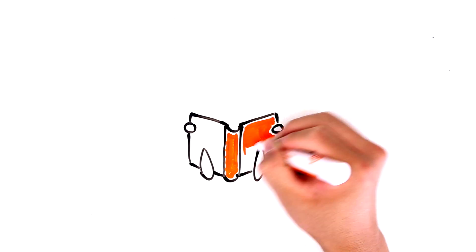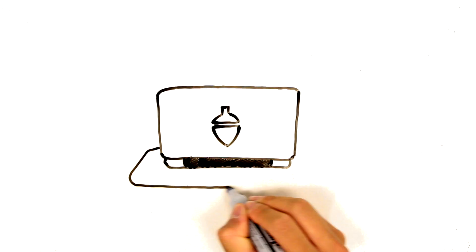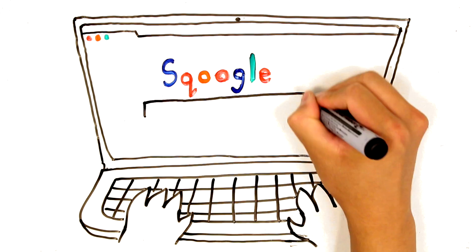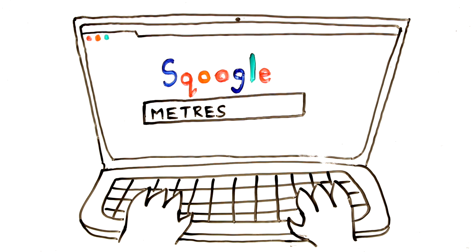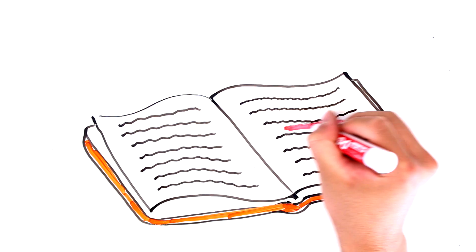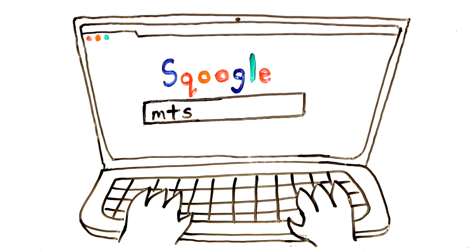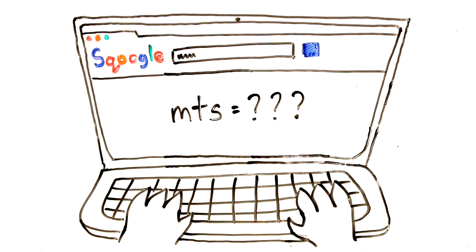Later that night, Grammar Squirrel consults her science textbook to find the appropriate unit of measurement, before using her favorite search engine to confirm what she discovered. She then researches the other abbreviations that her friends used by referring to her textbook and Squoogle once more, before explaining why these abbreviations would have caused a pretty big problem in their reports.